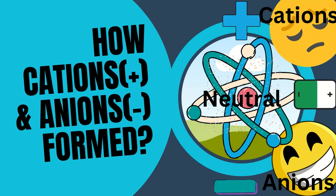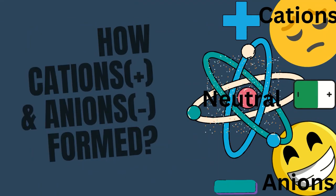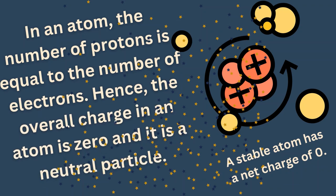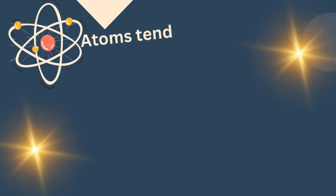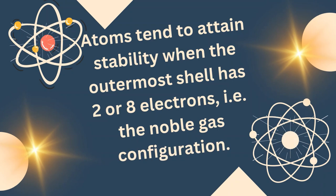How are cations, positively charged ions, and anions, negatively charged ions, formed? A stable atom has a net charge of zero. In an atom, the number of protons is equal to the number of electrons, hence the overall charge in an atom is zero and it is a neutral particle.